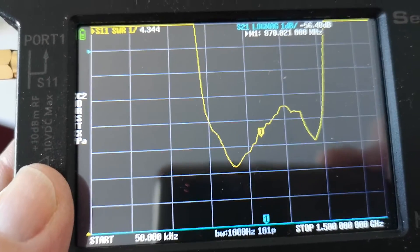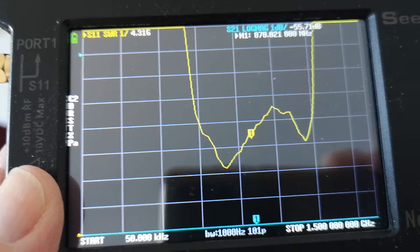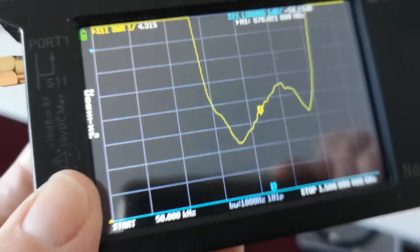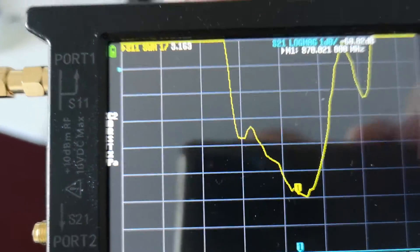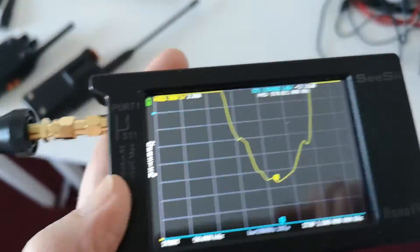So the SWR is like 1, 2, 3 at best at a lower frequency than 868. The marker is at 870 megahertz. This is not ideal. Not ideal at all.